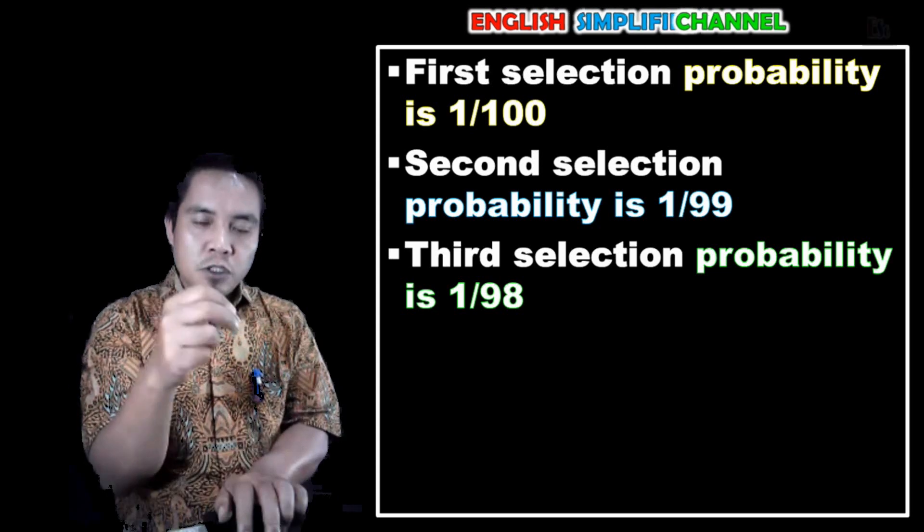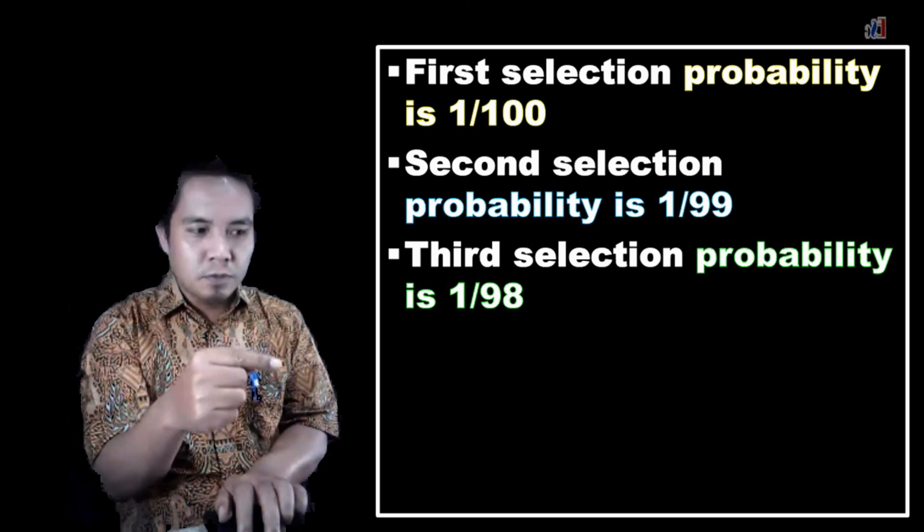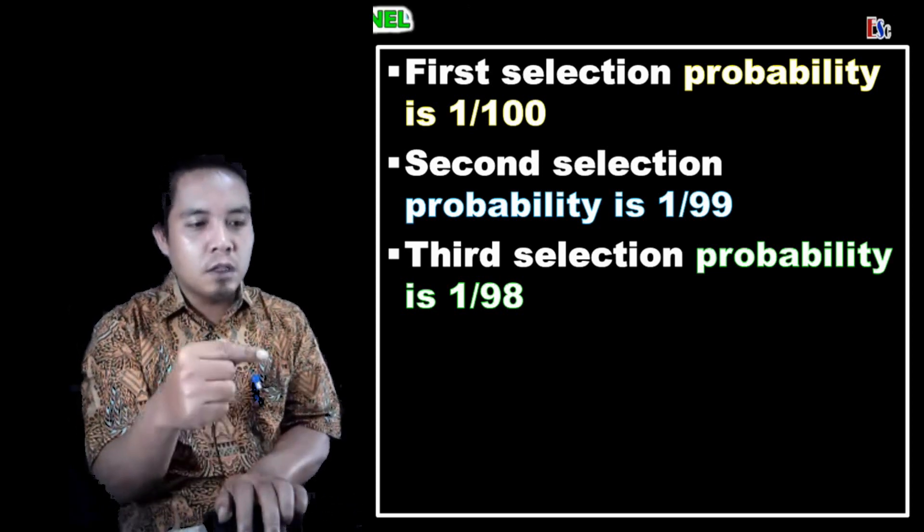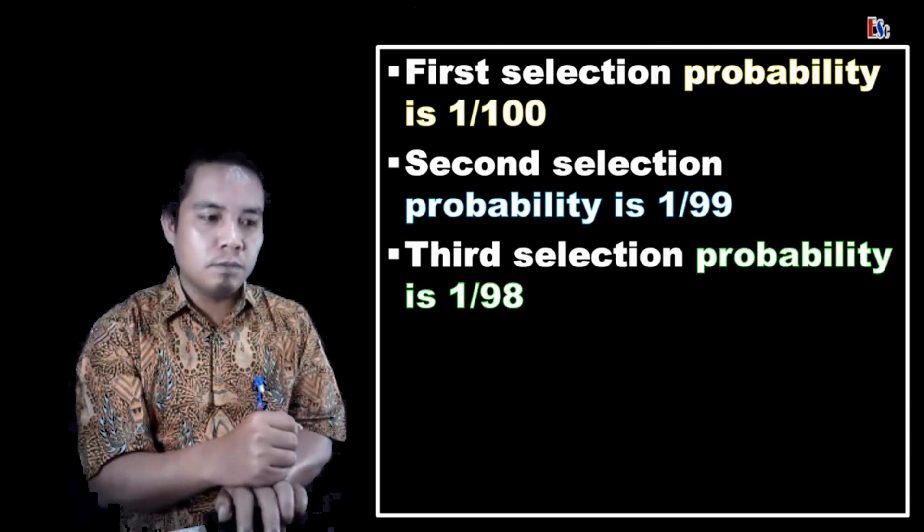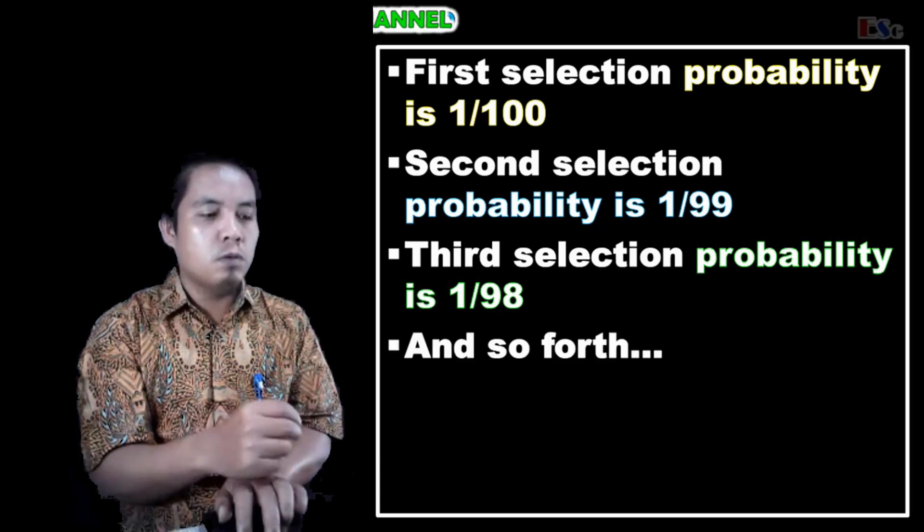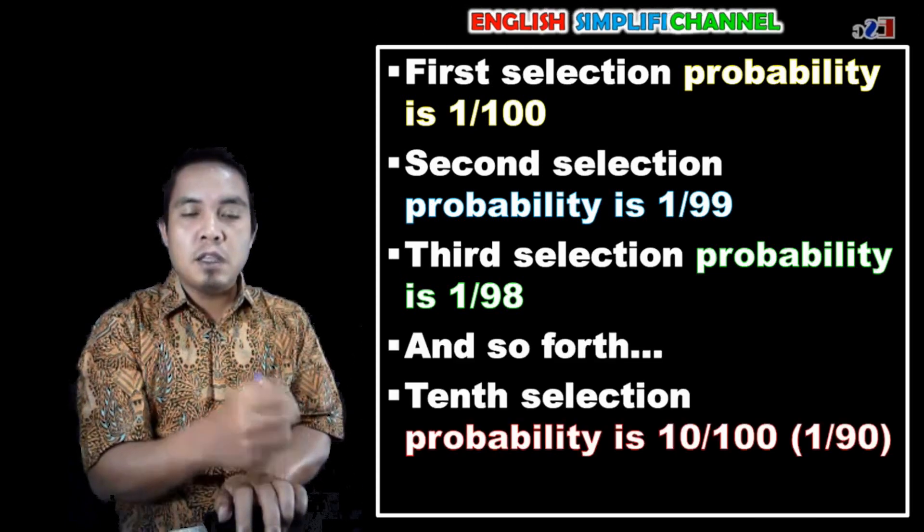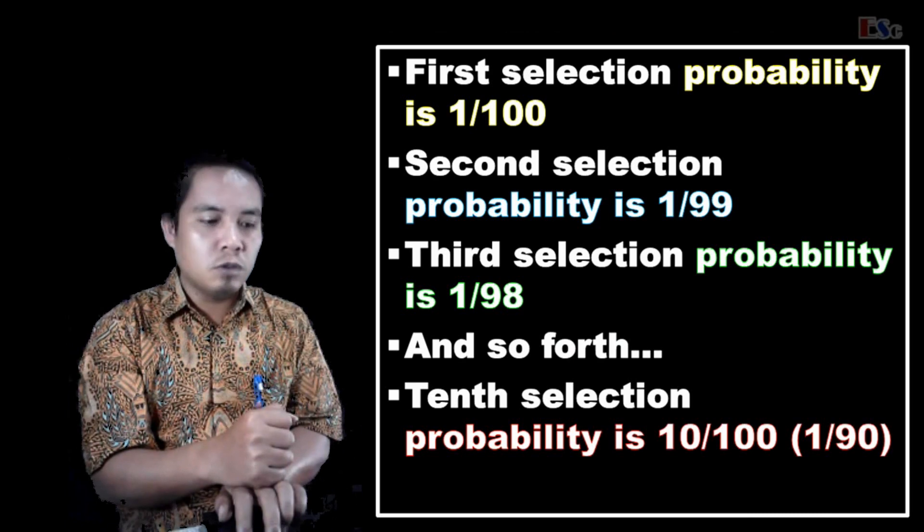And if we continue to the third sample, take a look. Now we have the probability 1 per 98, and so forth. We continue until we get all the sample that we want. So see that now we have 10 per 100, it equals 1 per 90. So the probability is going to be lesser and less.